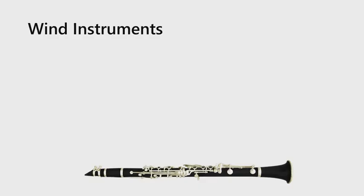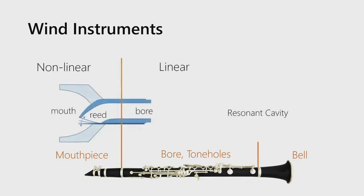Let's talk briefly about wind instruments before getting into the technique details. For most traditional wind instruments, you can characterize the instrument into three parts: the mouthpiece, the bore and tone holes, and the bell where sound radiates. The mouthpiece is largely a nonlinear system — a coupling between pressure inside the mouth and pressure inside the bore. The bore itself, including tone holes and bell, is largely a resonant cavity that is linear. There's a two-way feedback coupling between this nonlinear and linear system, which is crucial to producing the musical tone.